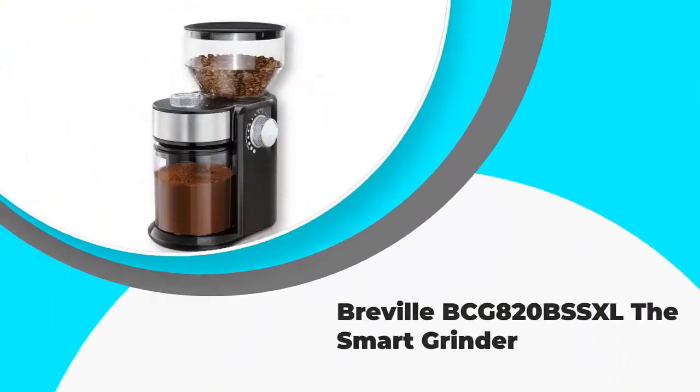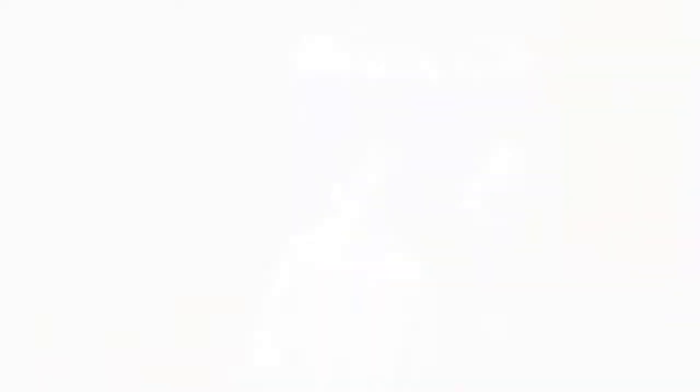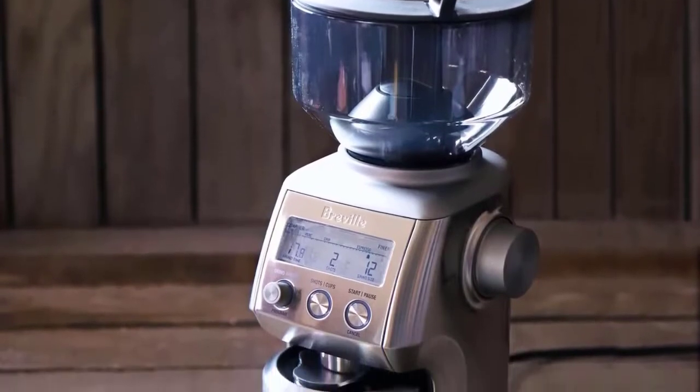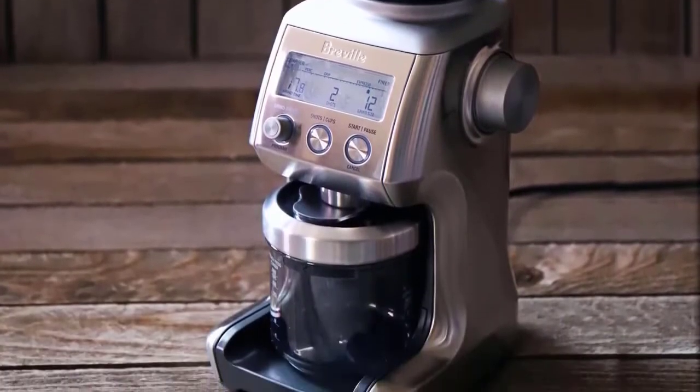Number 5. Breville BCG820BSSXL The Smart Grinder. The Breville Smart Grinder is a machine looking to sweep away the home grinding competition, with a wider selection of grind settings and features that offer you the best control.